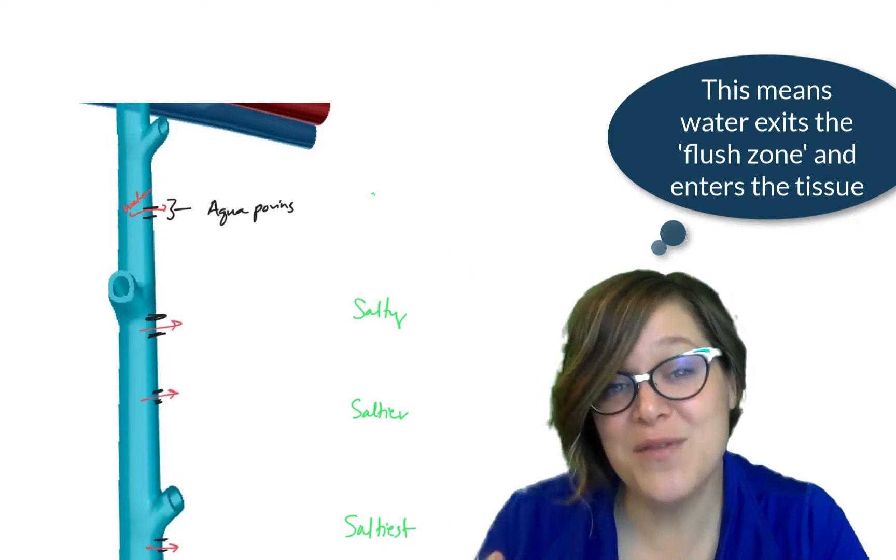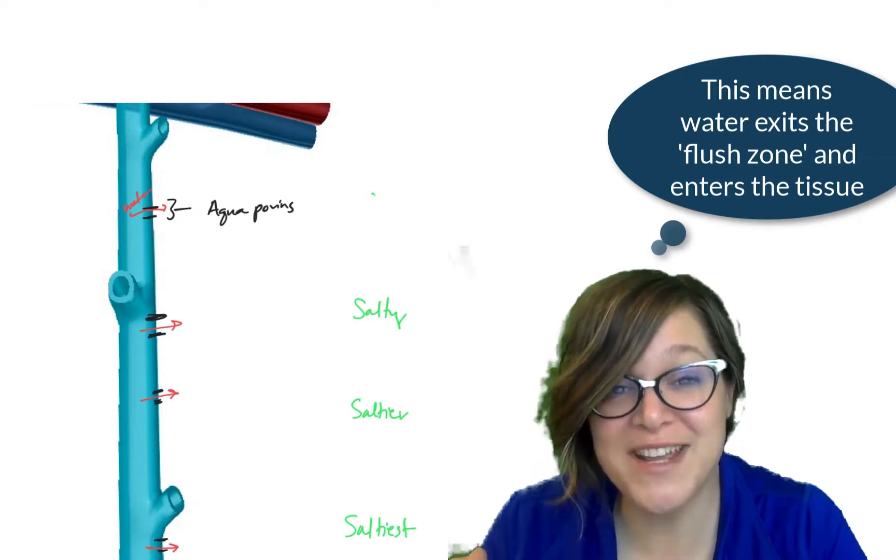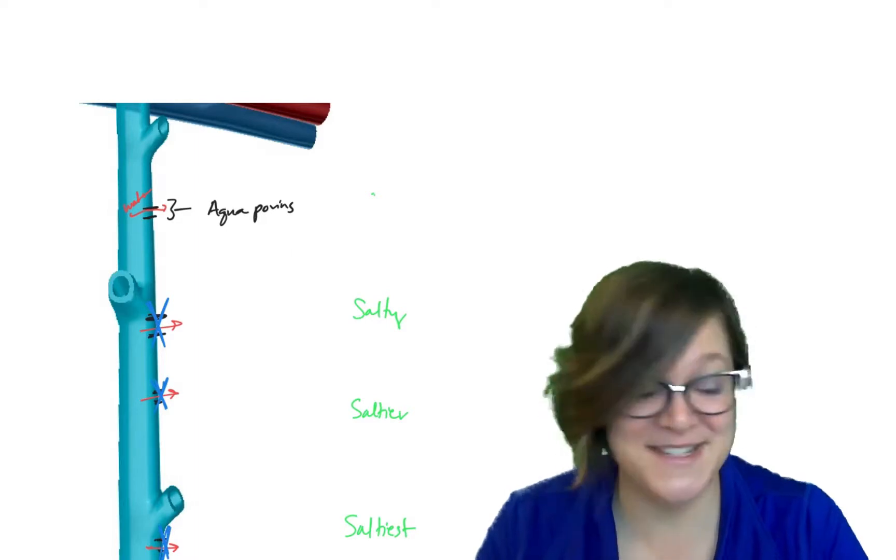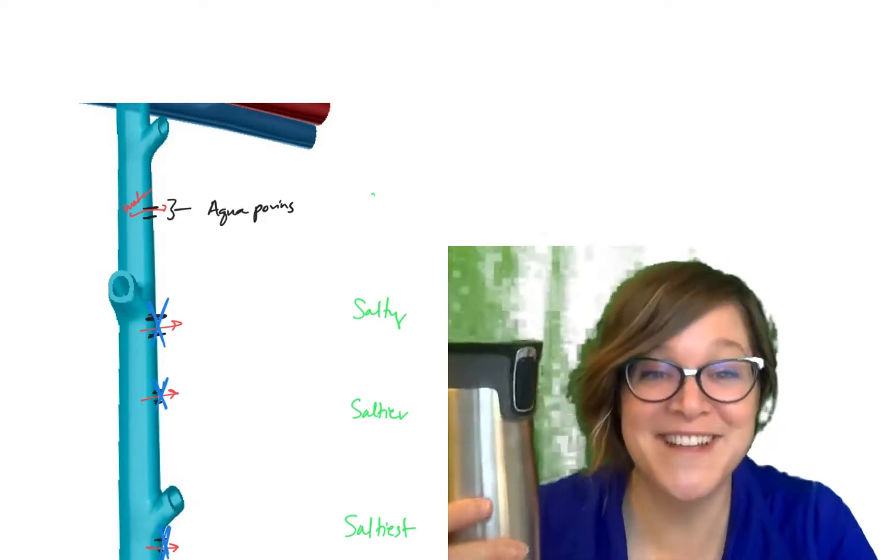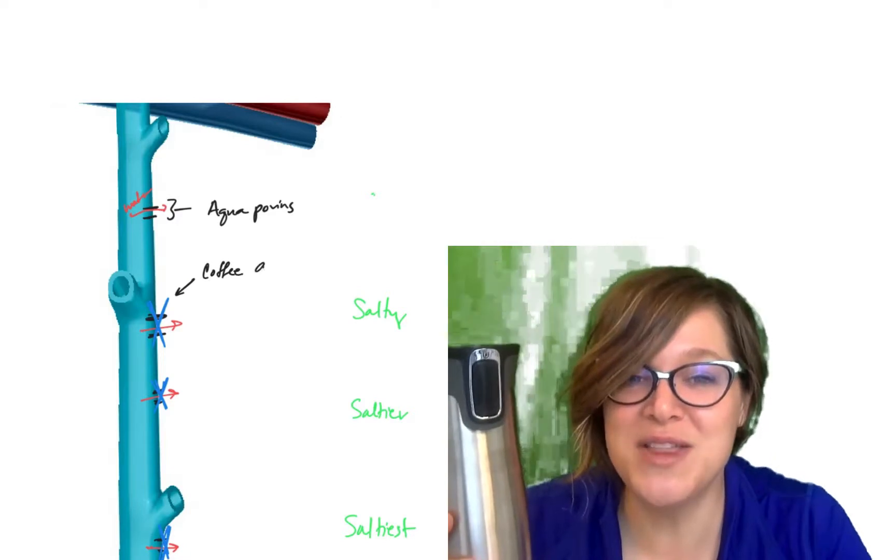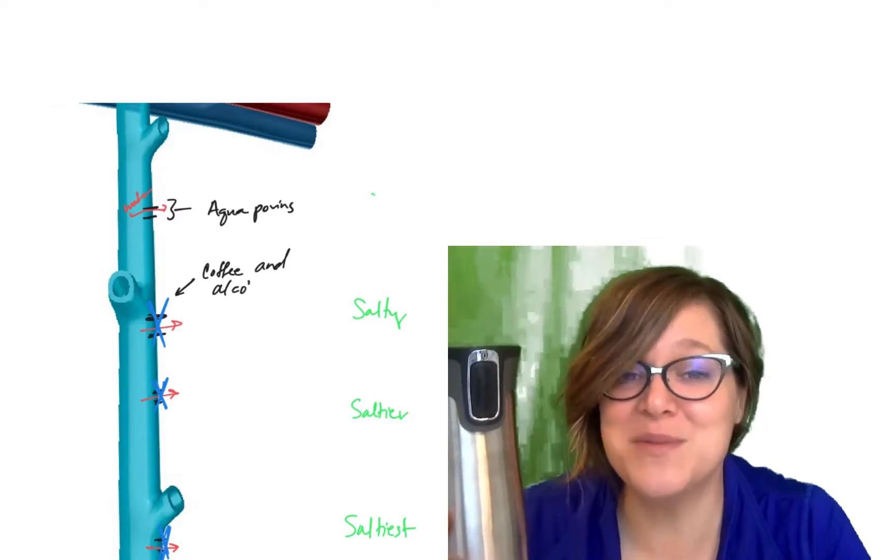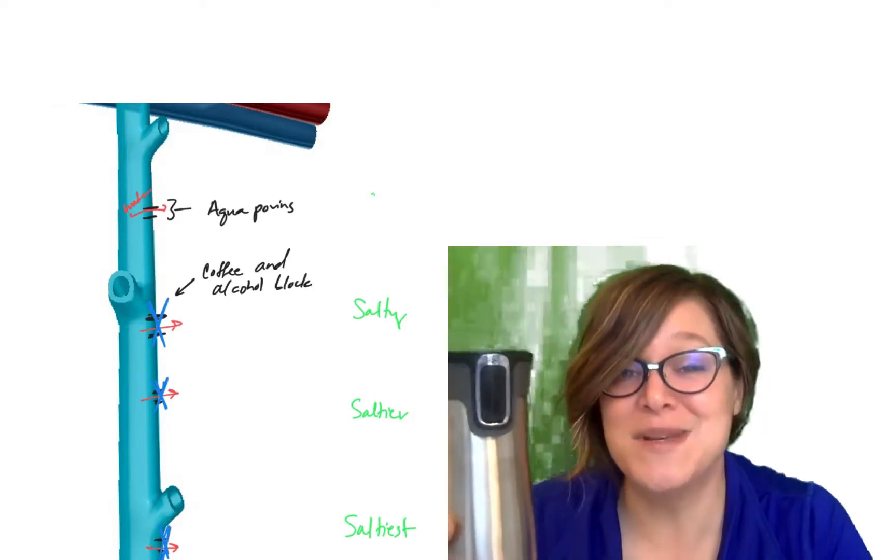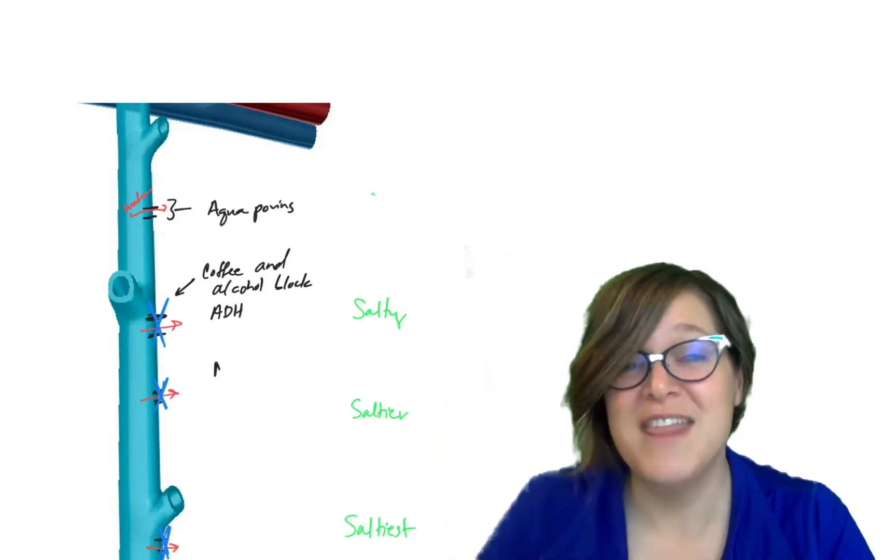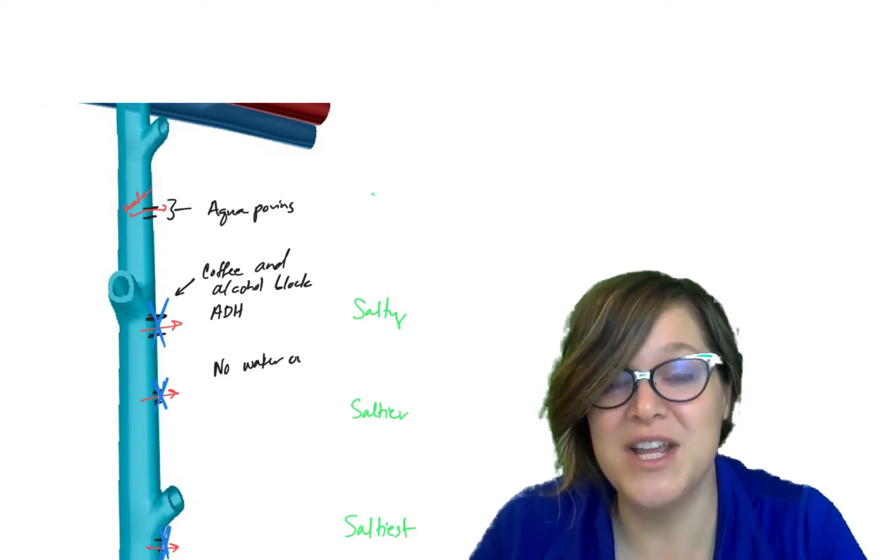If we close off those aquaporins, now the water can't exit. If the water can't exit, that means you pee more. Guess what does that? Well, I'll give you a clue. Coffee and alcohol. The two things where if you drink them, you're going to have to visit the bathroom sooner rather than later. It's because you're not reabsorbing that water, and since you're not reabsorbing that water, that means that it's coming out in your urine.